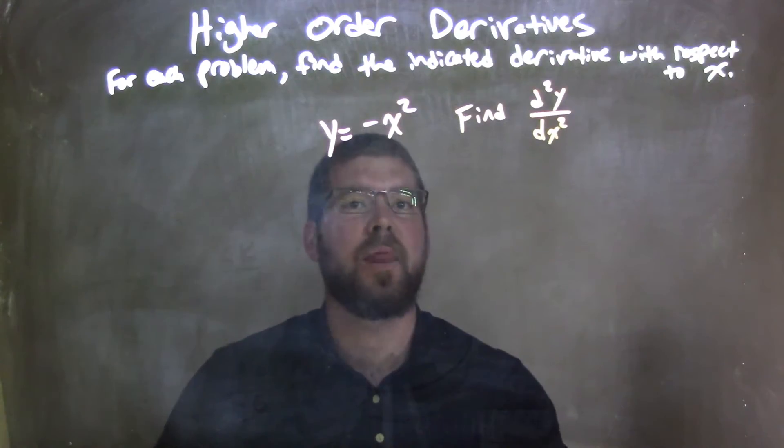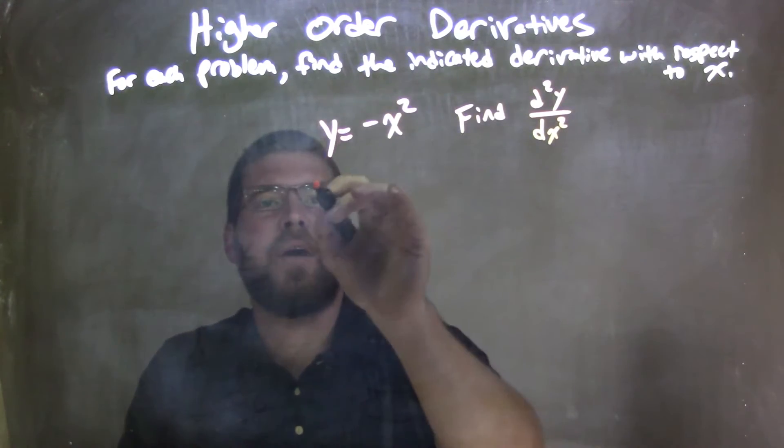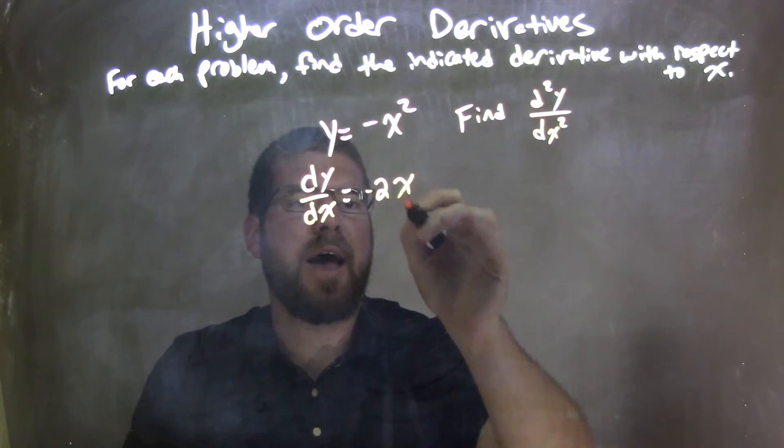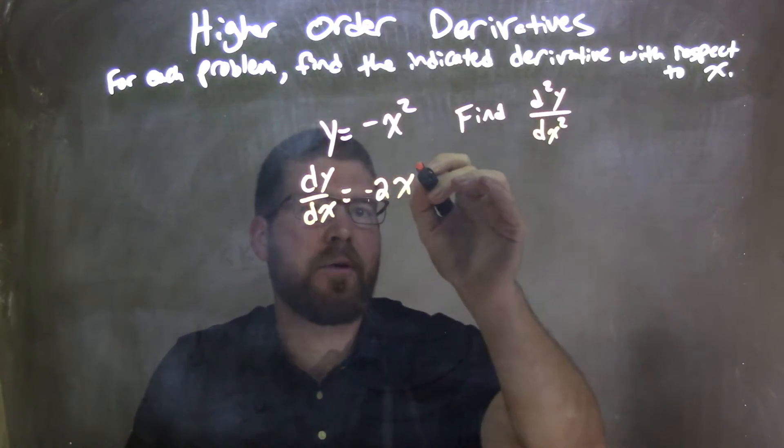First thing we need to do is find the first derivative. So I want to find dy/dx here. I'm going to use the power rule, bring down that 2, so we now have negative 2x to the first power.